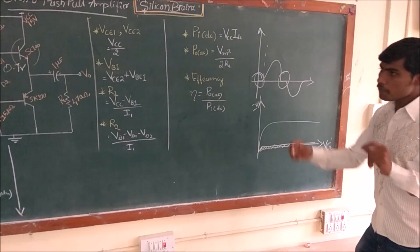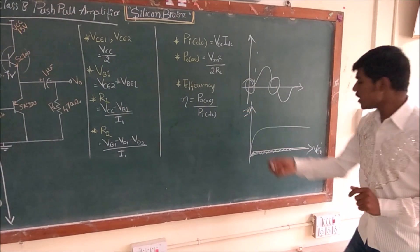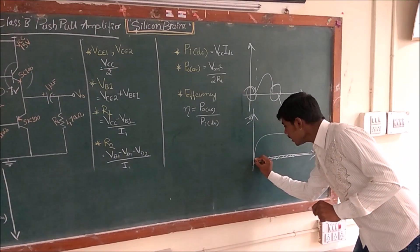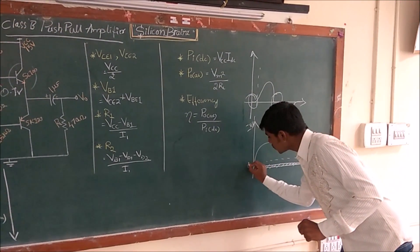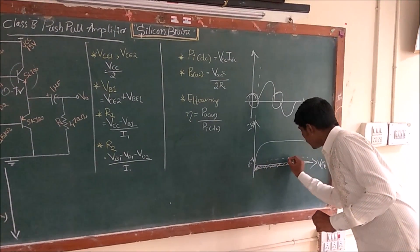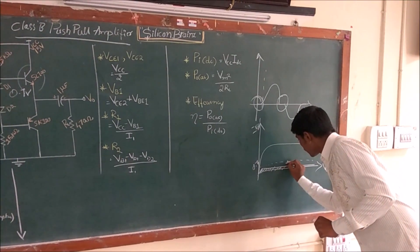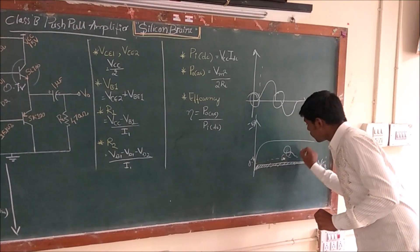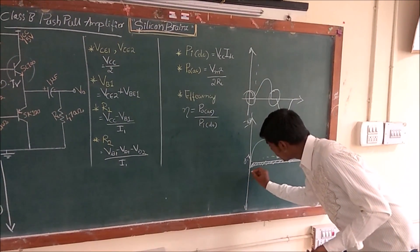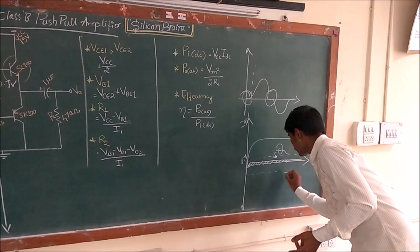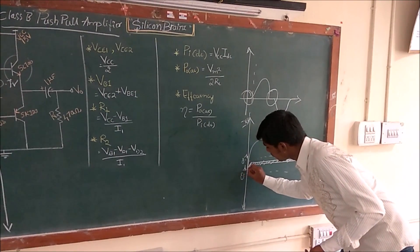Whereas for this case, it's slightly above the cutoff region. That means it's about 0.7 volts. It doesn't conduct like this. This is at some point, slightly above the cutoff point.